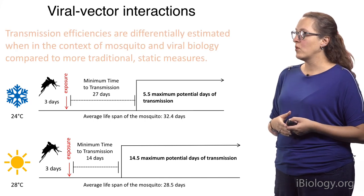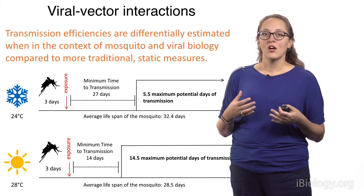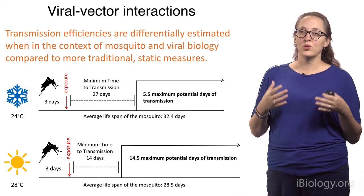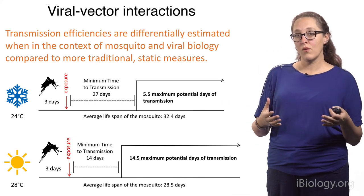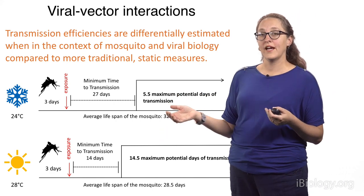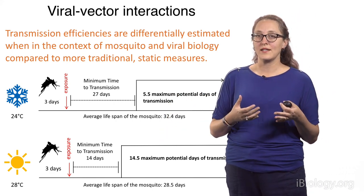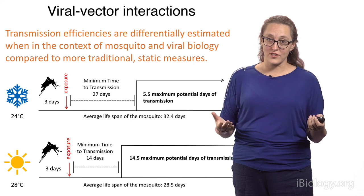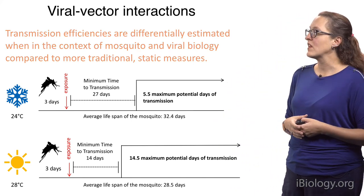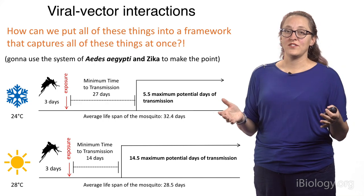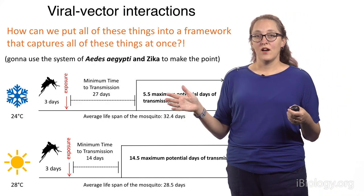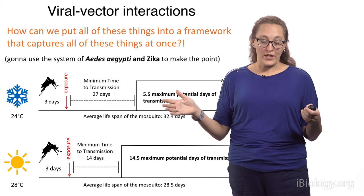What we wanted to do was determine if we can use the vectorial capacity equation to integrate all these mosquito life traits that are currently not really being considered in estimating transmissibility of an arbovirus. We're going to use a system of Aedes aegypti and Zika to make the point.